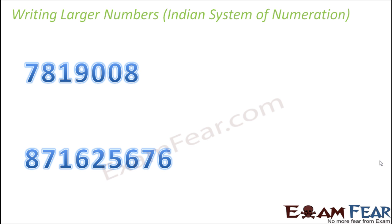Because if we are able to determine that, we will very quickly be able to tell the name of that number. So basically, writing larger numbers in a better way would make it more convenient to read or name the numbers. Now on the screen, you see two large numbers and instantly looking at them, you might not be able to tell their names because you first need to know the position of the digits — only then you'll be able to tell the names.